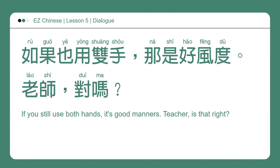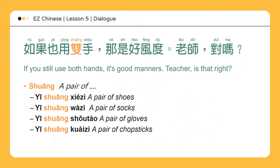如果也用双手，那是好风度。老师，对吗？If you still use both hands, it's good manners. Teacher, is that right? 双 means a pair of. 一双鞋子 — a pair of shoes. 一双袜子 — a pair of socks. 一双手套 — a pair of gloves. 一双筷子 — a pair of chopsticks. Other examples include hands, feet, and legs.